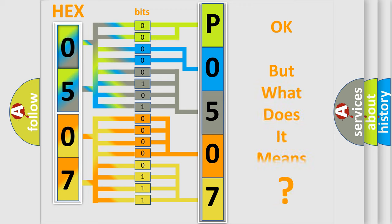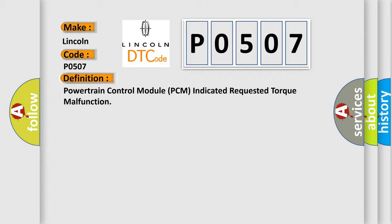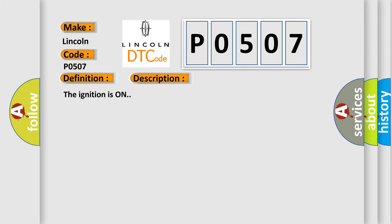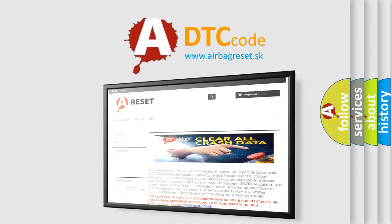The number itself does not make sense to us if we cannot assign information about what it actually expresses. So, what does the diagnostic trouble code P0507 interpret specifically for car manufacturers? The basic definition is: Powertrain control module PCM indicated requested torque malfunction. The ignition is on. The airbagreset.sk website aims to provide information in 52 languages. Thank you for your attention and stay tuned for the next video.